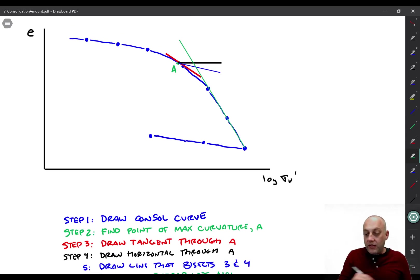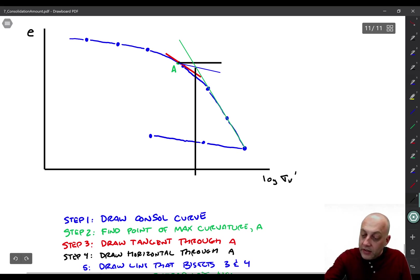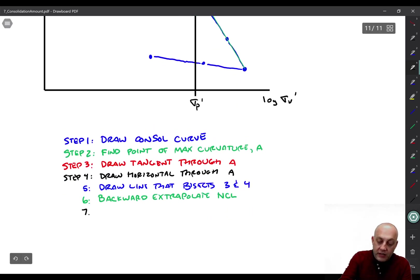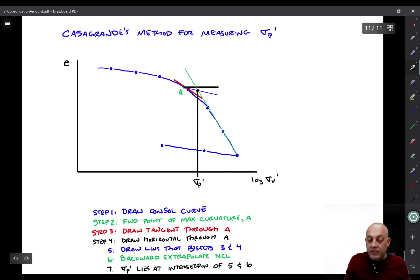Okay, and then the rest of it is easy. Now we just need to interpolate sigma P prime, and it's going to be right at this point. So I'll draw a straight line down, and there it is. This is sigma P prime. Notice that sigma P prime doesn't actually lie on the consolidation curve, right? It's a little bit higher than the consolidation curve, and that's because of sample disturbance. So step seven, then, is sigma P prime lies at the intersection of five and six, right? So anyway, there it is. That's Casagrande's procedure, and there is some indication of this in your textbook.